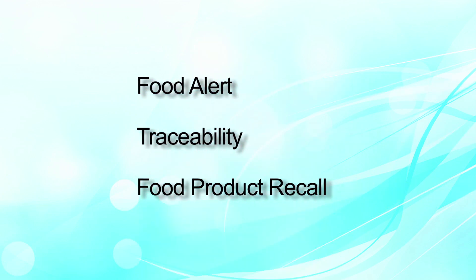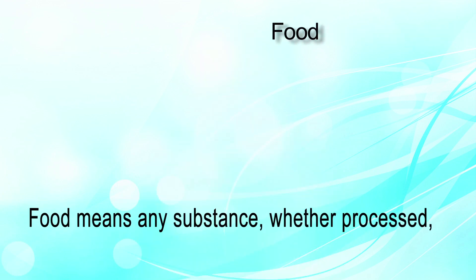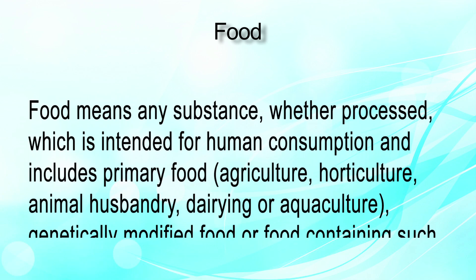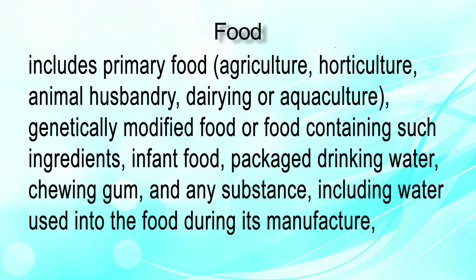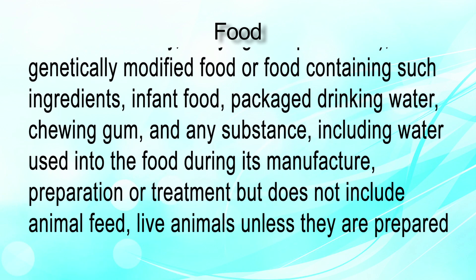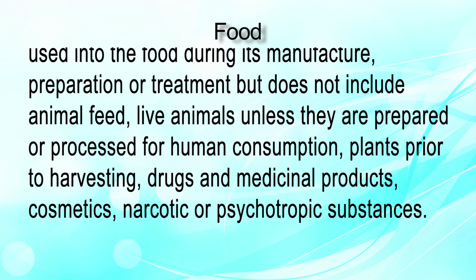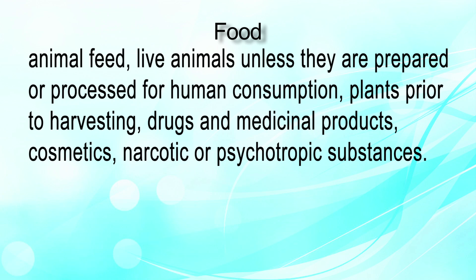We will see the three parts: Food Alert, Food Traceability and Food Product Recall. The definition of food given in the act is very elaborative. It includes food means any substance whether processed, intended for human consumption, and includes primary food, agriculture, horticulture, animal husbandry, dairy or aquaculture, genetically modified foods or food containing such ingredients, infant food, packaged drinking water, chewing gum and any other substances including water used in food preparation during manufacturing, preparation or treatment. But it does not include animal feed, live animals unless prepared or processed for human consumption, plants prior to harvest, drugs and medicine products, cosmetics, narcotics or psychotropic substances. This food definition is so elaborative that everything we eat is covered, including nutraceuticals.